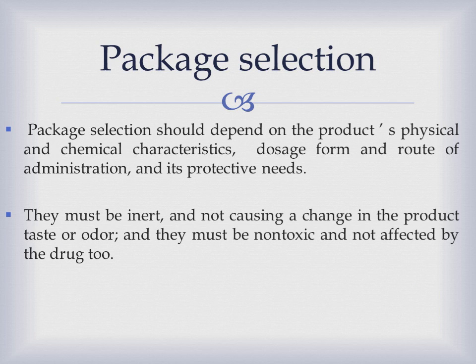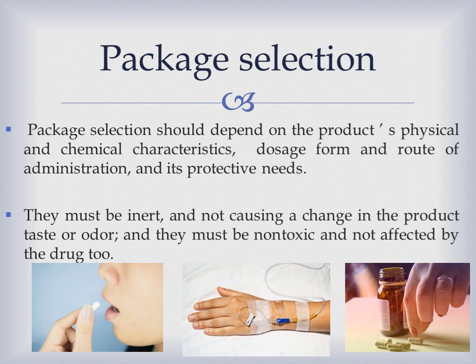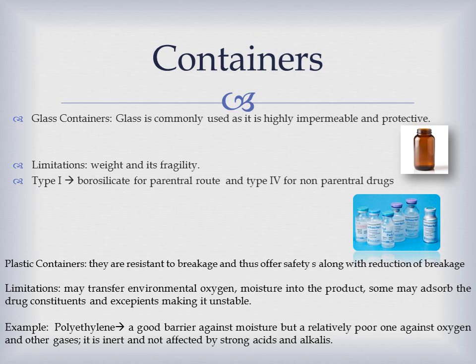To make a proper choice of packaging material, primary packaging selection should depend on various points like the physical and chemical properties of the drug and the drug dosage form and the route of administration. But in general, they should be inert, non-toxic, not affected by or affecting the drugs. The materials forming primary packaging include glass containers, plastic containers, and metallic containers.